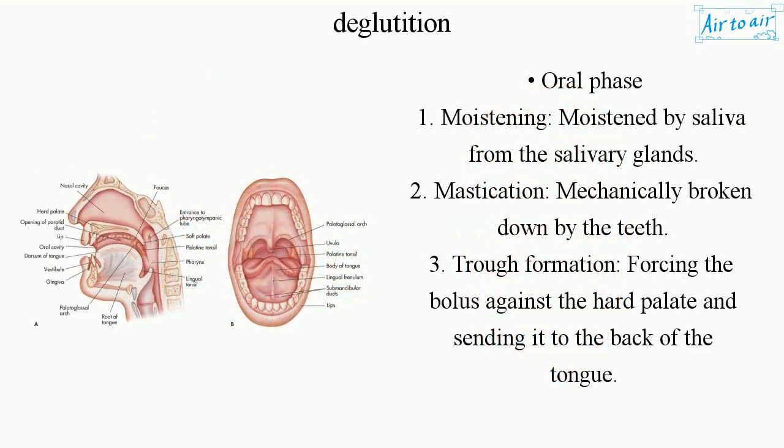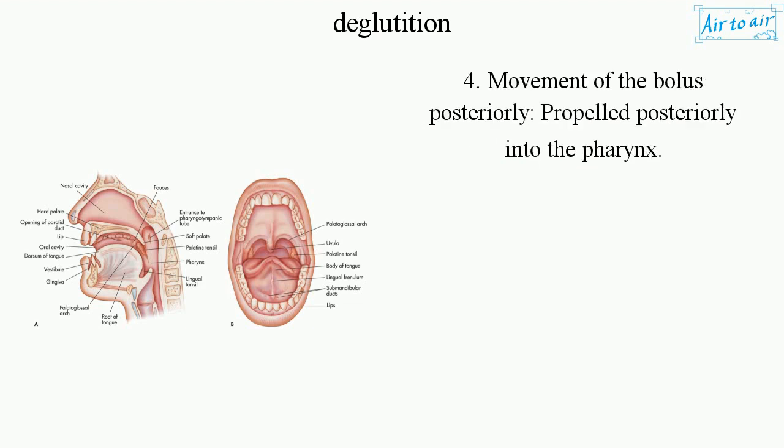Oral phase steps: 1. Moistening — moistened by saliva from the salivary glands. 2. Mastication — mechanically broken down by the teeth. 3. Trough formation — forcing the bolus against the hard palate and sending it to the back of the tongue. 4. Movement of the bolus posteriorly — propelled posteriorly into the pharynx.